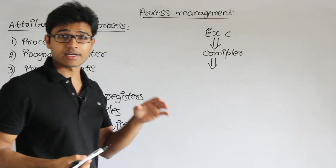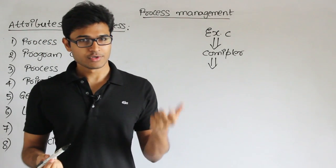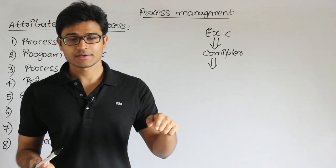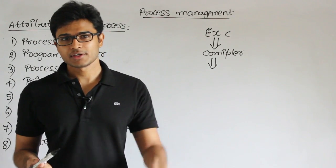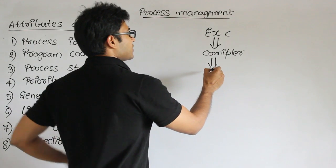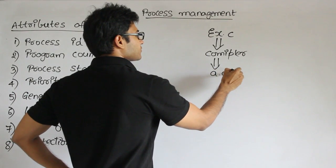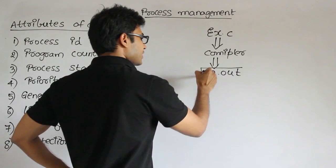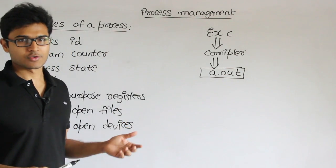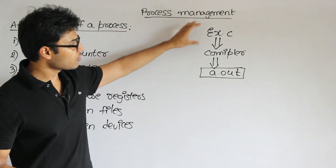The operating system's task is not to take a high-level language program and execute it directly. Before doing this, you should convert it to machine-level language, which the operating system will understand, and then it will run directly on the hardware. The compiler is going to generate something like 'a.out', which is a file that contains executable code — the machine code. Either the source file or this executable file — these two are called programs.